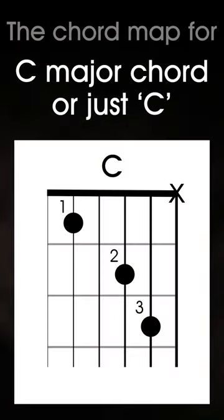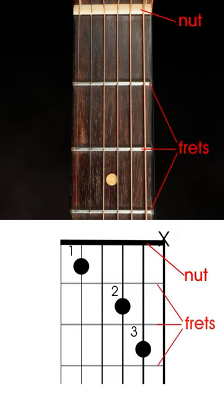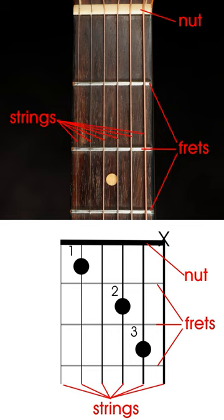A chord chart is basically a graphic representation of the neck of the guitar. So here you can see the nut, the frets, and the strings.